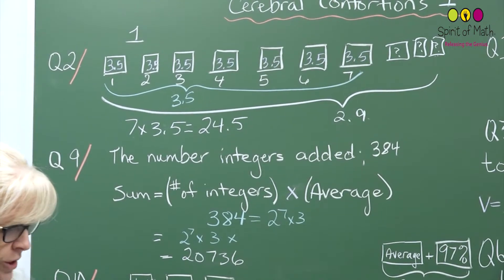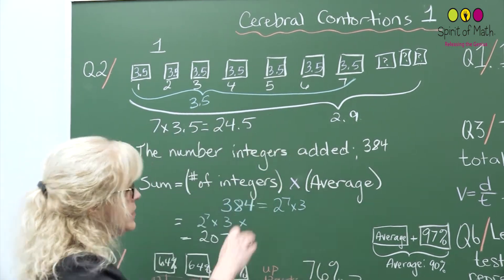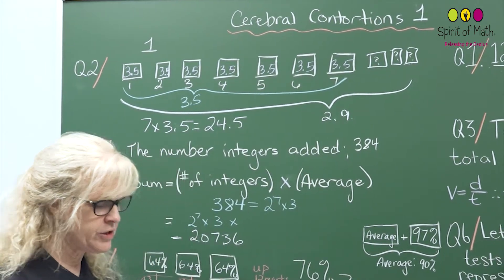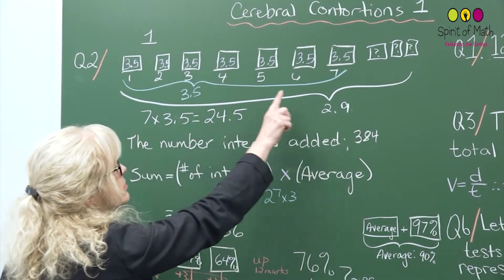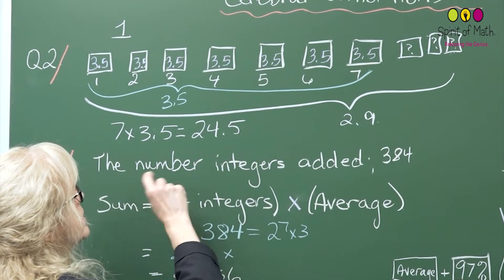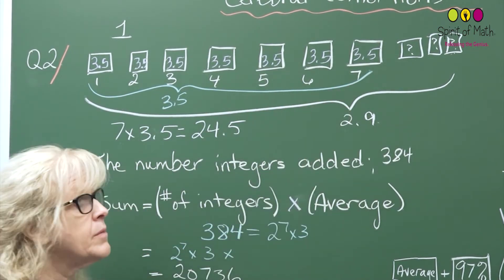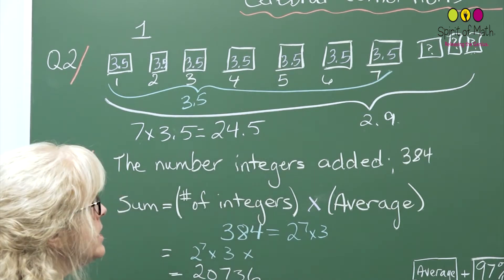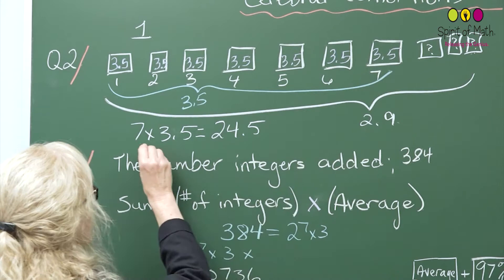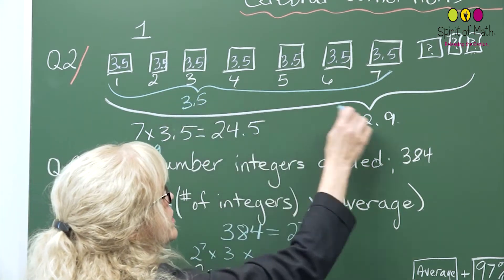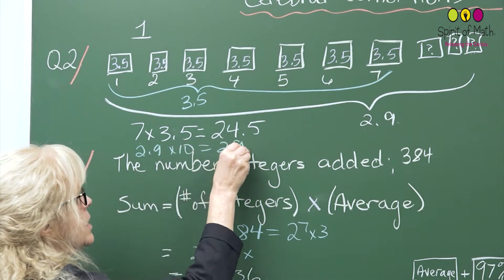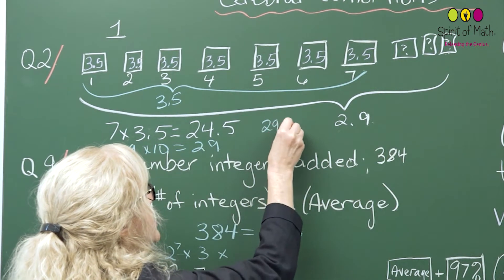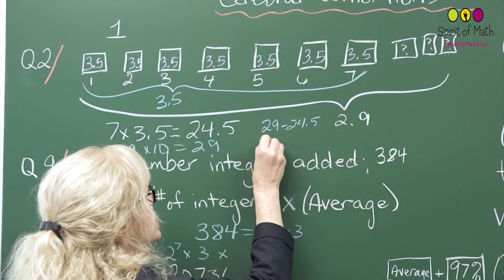Question number 2 says the average of 7 numbers is 3.5, so I've got the 7 numbers as 3.5. When 3 more numbers are added, the value is 2.9. What is the average of the last 3 numbers? Basically, if you said, okay, what's the total for the first 7 numbers, that first total is 7 times 3.5, which is 24.5. And then you can find out what the total is for all 10, and that would be 2.9 times 10, which is 29. So basically, the difference would be right there — 29 minus 24.5 gives you 4.5.